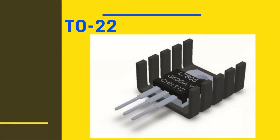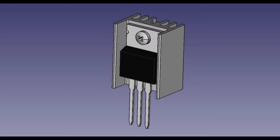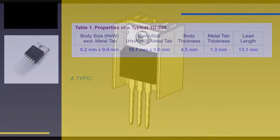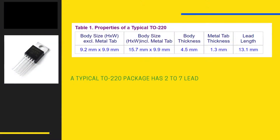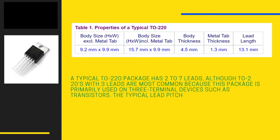The TO220 is the most common type of through-hole transistor package. It features a flat metal tab at its back to dissipate relatively large amounts of heat. The TO220 is commonly used for housing transistors, thyristors, and ICs. A typical TO220 package has 2 to 7 leads, although 3 leads are most common since this package is primarily used on 3-terminal devices such as transistors. The typical lead pitch of a TO220 package is 2.54 mm.